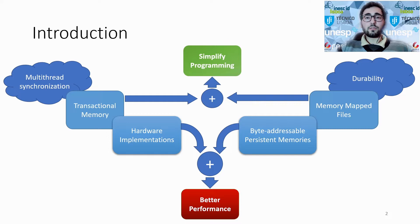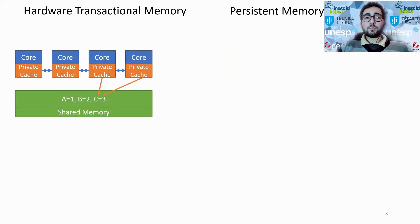In hardware transactional memory, HTM for short, concurrent accesses to shared locations are handled by hardware mechanisms. Take as an example two transactions in different threads that try to access the same shared location. The hardware-level conflict detection will resolve the conflict by means of aborting one of these transactions.